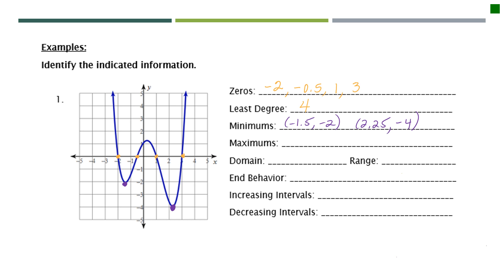For the maximum, I only have one place where there's a hill that reaches a high point. The absolute maximum would be infinity since the graph continues to go up to the sides, but here is my relative maximum, where I'm placing this blue dot. It's about a quarter to the right, so 0.25, and not quite one and a half up, so about 1.25.